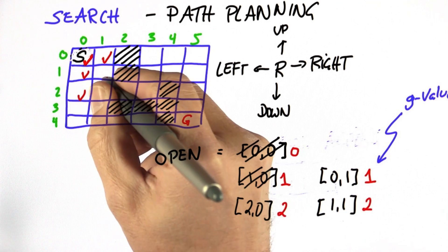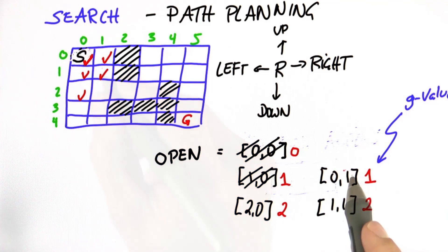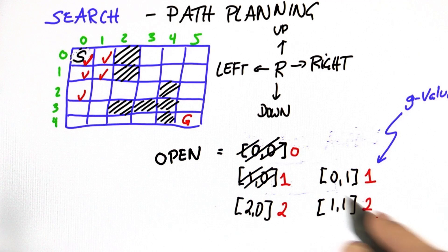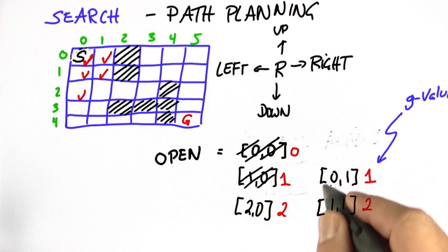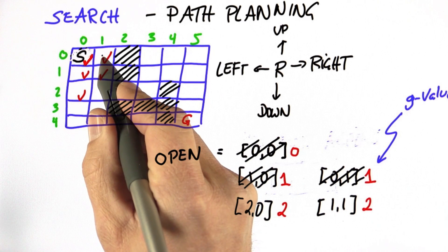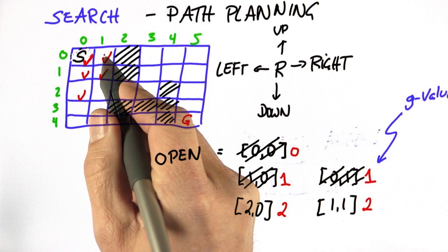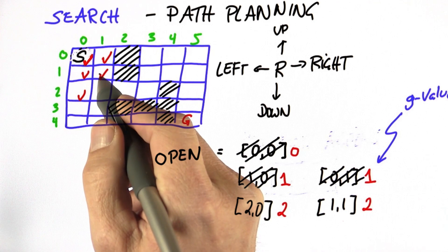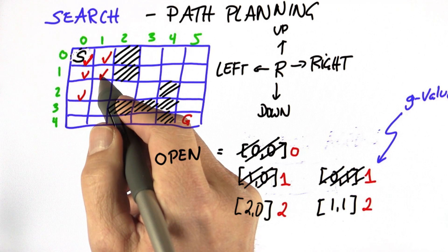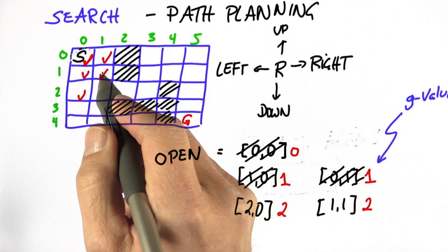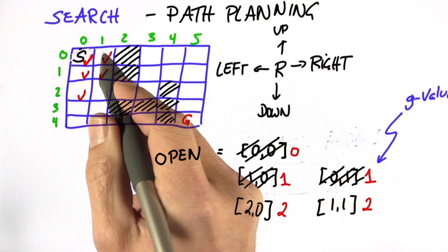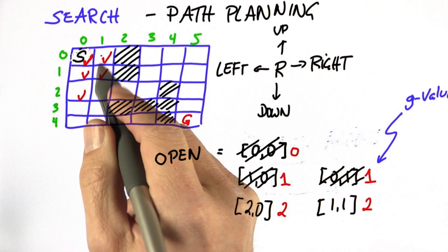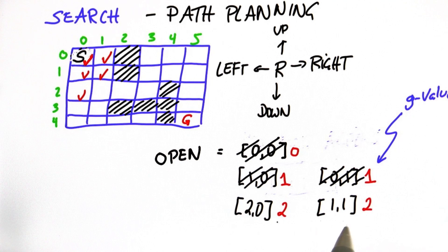And we check those. I now pick the node on the open list with the smallest g value. It's the node (0, 1). This has two neighbors, (0, 0) and (1, 1), but both are already checked. So therefore there's no expansion that takes place — I only expand if I find an unchecked node. So my new open list contains these two nodes, and I recurse.